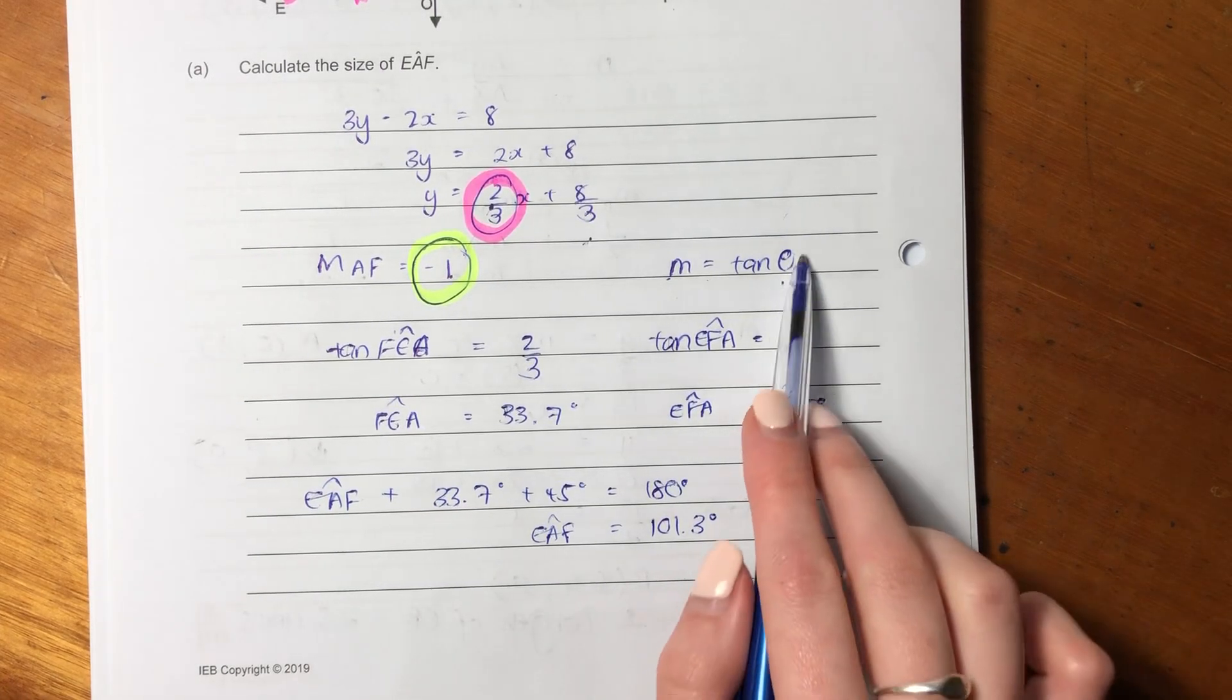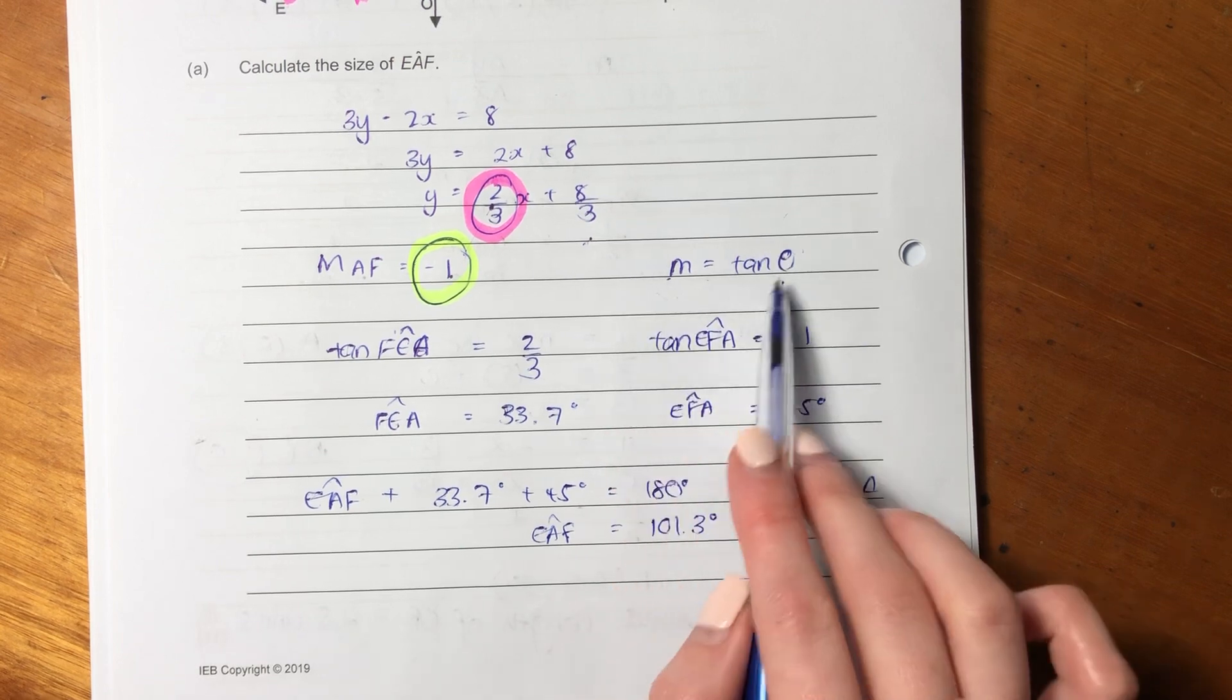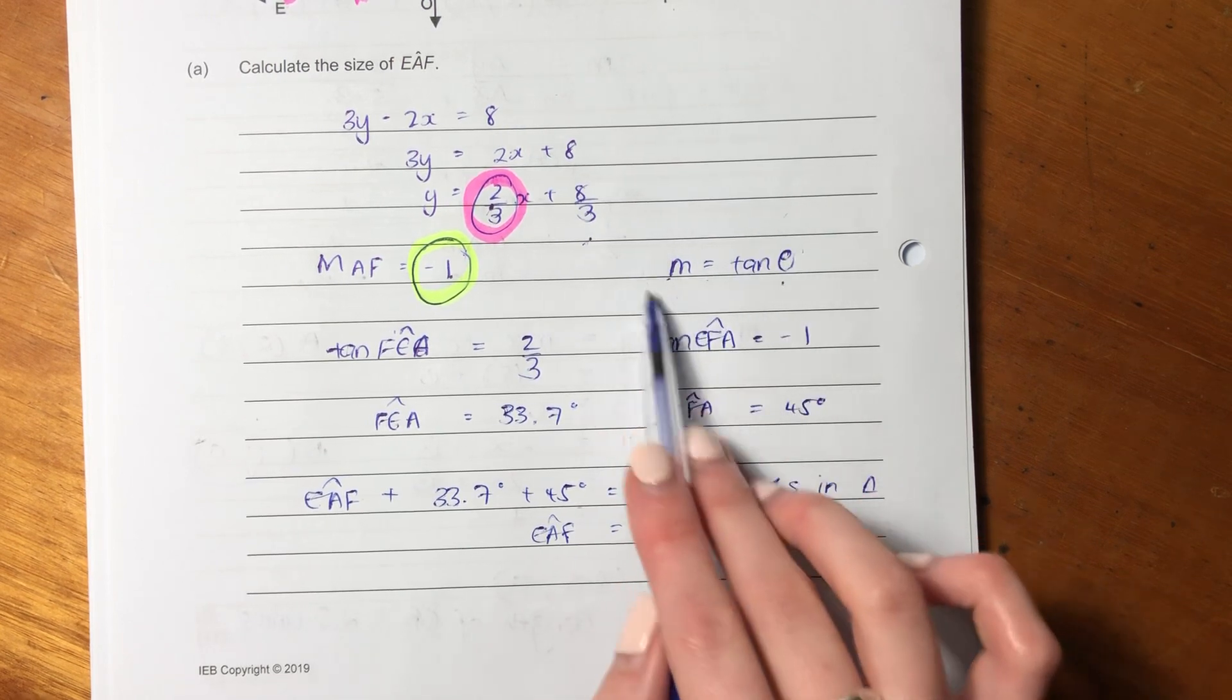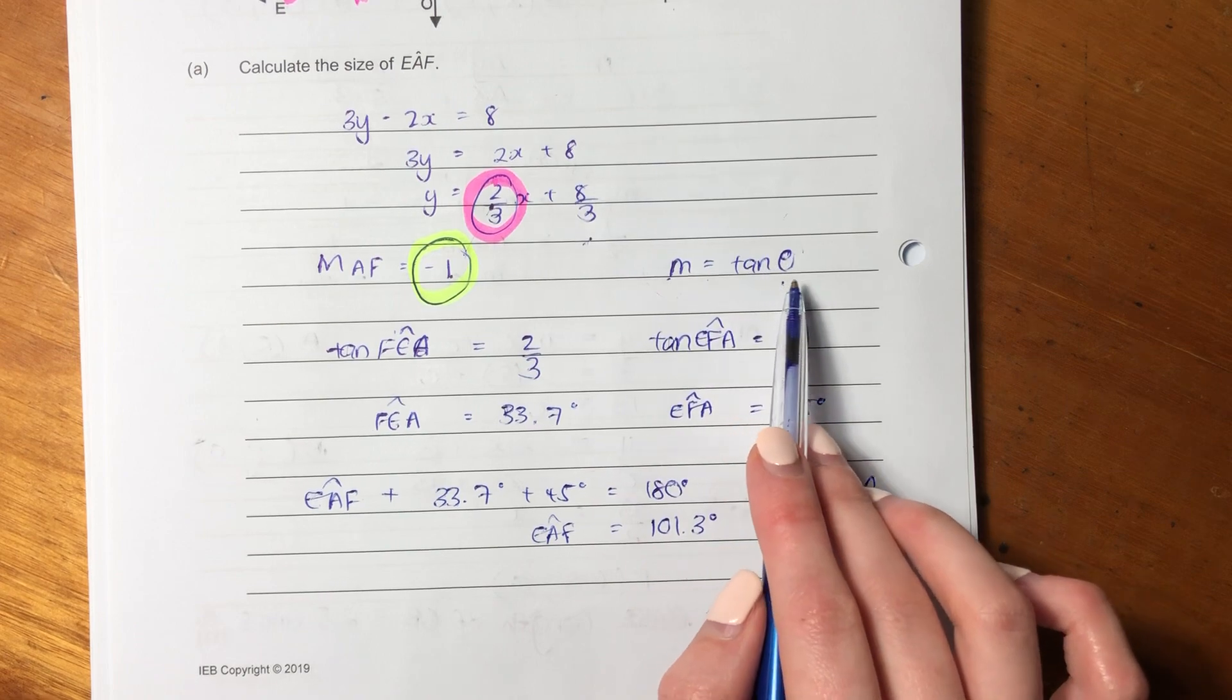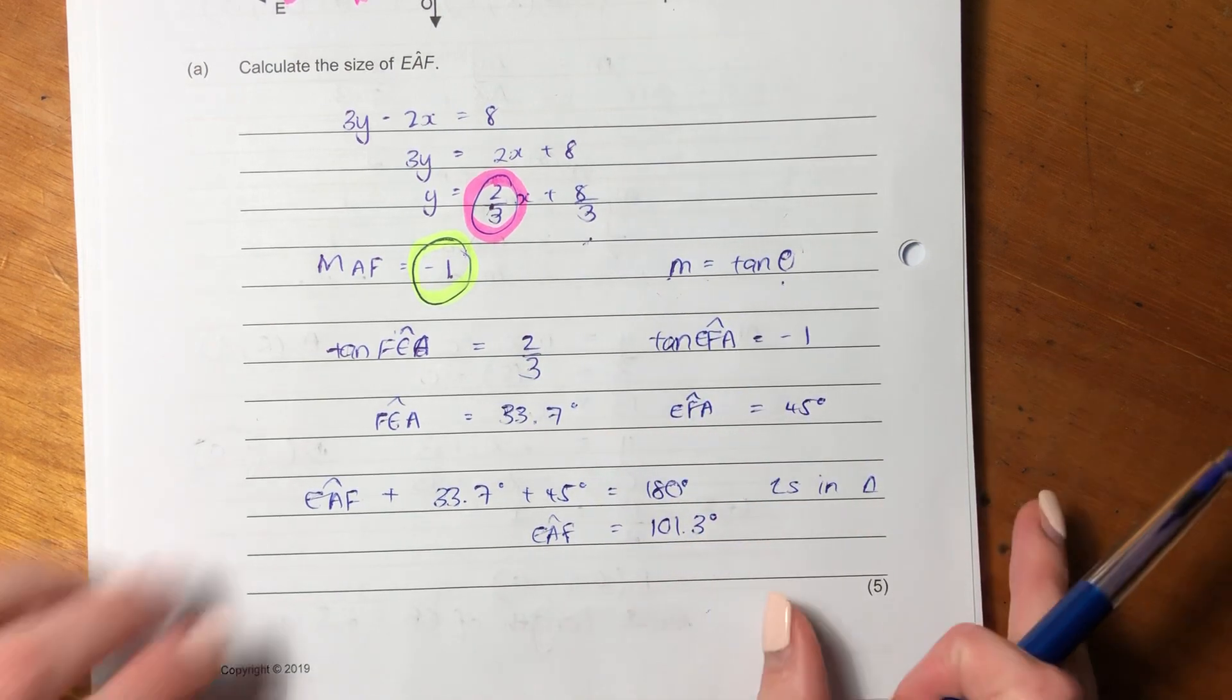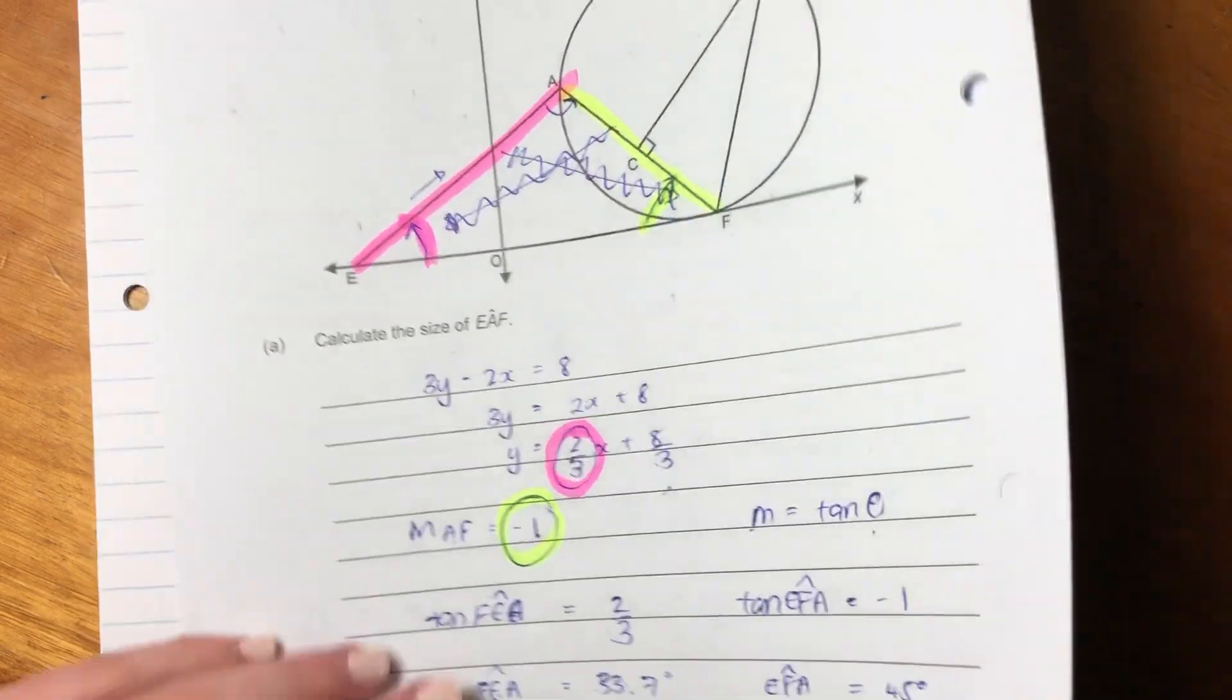So we went back to a formula that we often actually only use in paper one, but we're bringing it in here. This, remember, is the angle of inclination. Remember that. Let's now move on to B.